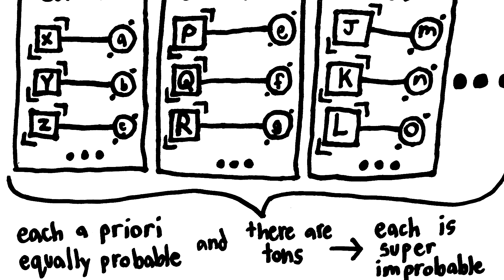And since each combination gets the same a priori probability, each combination of psychophysical laws gets an unimaginably tiny a priori probability.